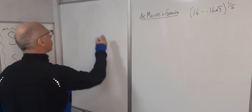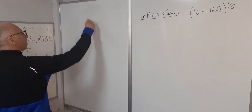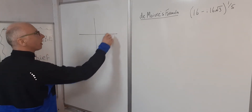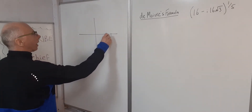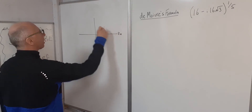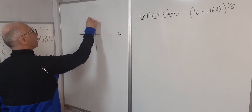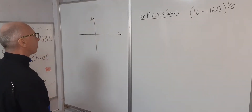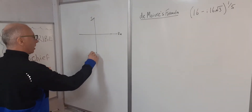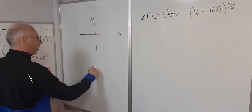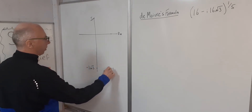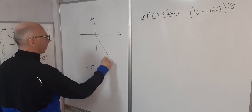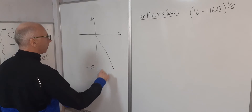We'll start off by drawing this on the Cartesian graph. So 16 is about here on the real axis, and then the imaginary axis — minus 16√3 is going to bring us somewhere down here. So our line will go to here.